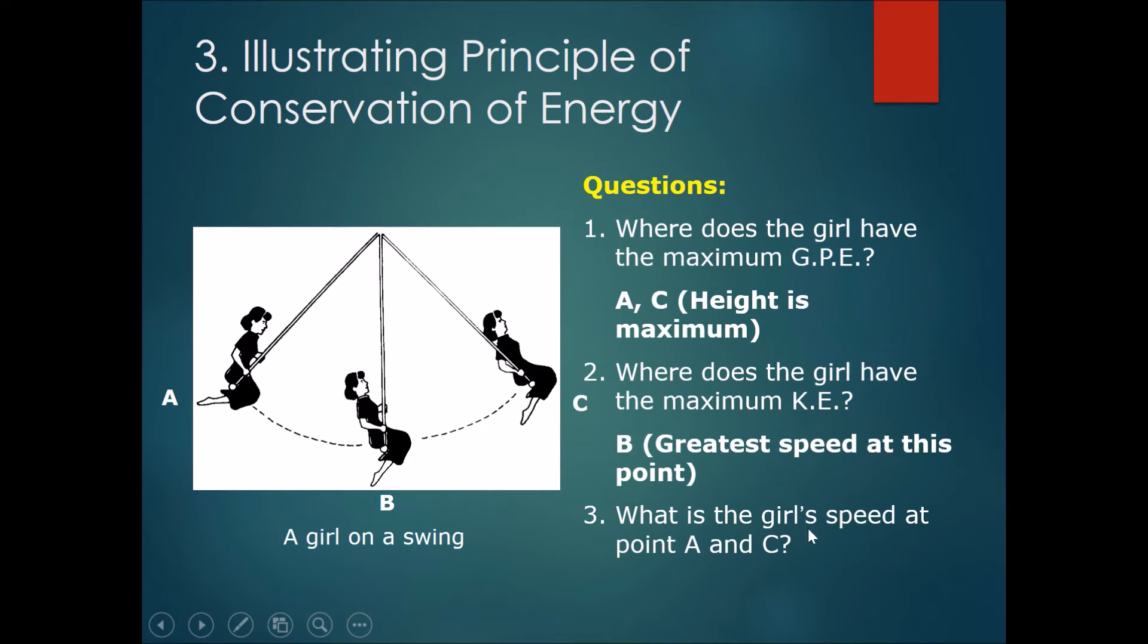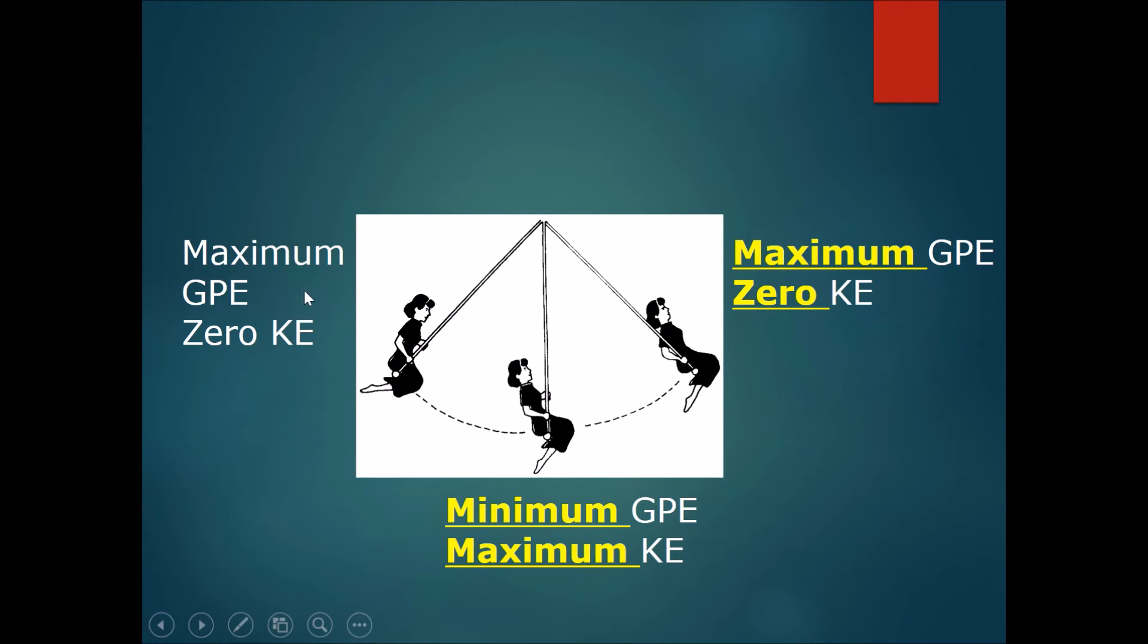And what is the girl's speed at points A and C? The answer is zero. At a certain point, at the peak of the swing, she would stop for an instant. To summarize, over here, there will be a maximum of GPE and zero KE. On this side, there will also be a maximum GPE and zero KE. However, over here, there will be a minimum of the GPE and she will have the maximum KE.